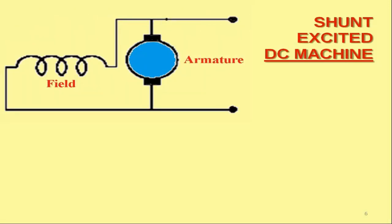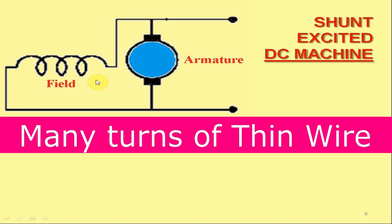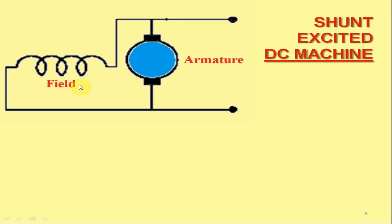Next is the shunt excited DC machine. In this representation, you may easily notice that the field winding is connected in parallel to the armature winding. Like the separately excited DC machine, the field winding in a shunt excited DC machine also comprises many turns of thin wire, thus having high resistance. While the shunt excited DC machine is operating in generating mode, the generated voltage across the armature terminals is applied to the field winding. In contrast, while it is operating in motoring mode, both the field winding and armature winding are connected across the common DC supply.